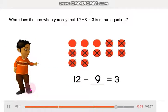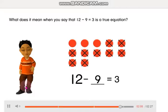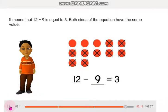9 is the missing number. 9 makes the equation true. What does it mean when you say that 12 minus 9 is equal to 3 is a true equation? It means that 12 minus 9 is equal to 3. Both sides of the equation have the same value.